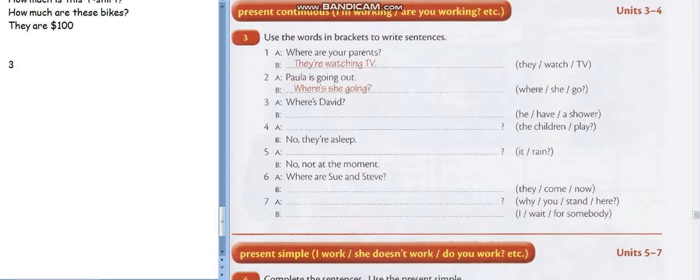Number 3. A: Where is David? Good. B: He is having a shower. Good. Excellent. He is having a shower. Great.